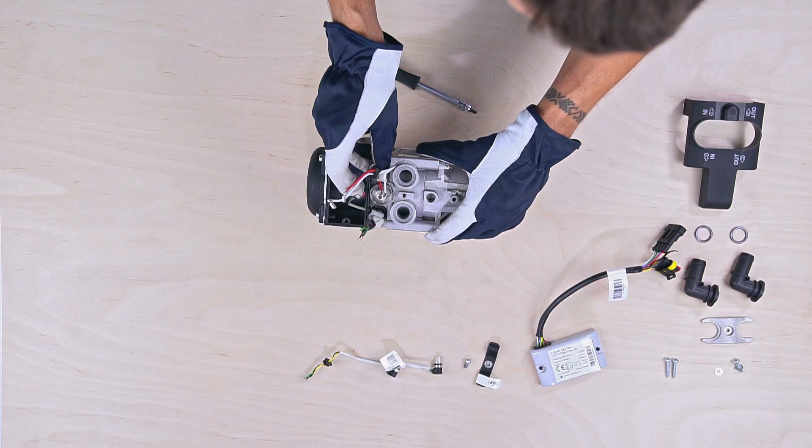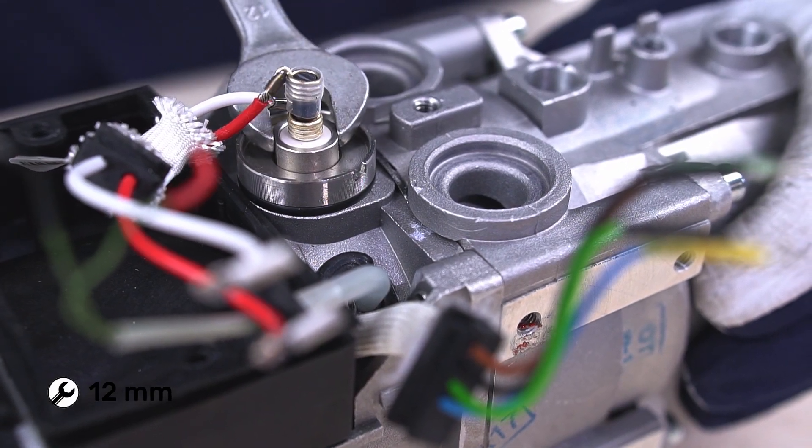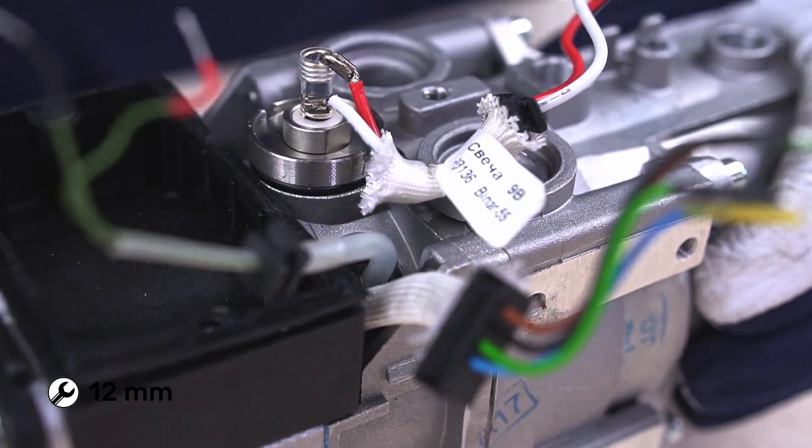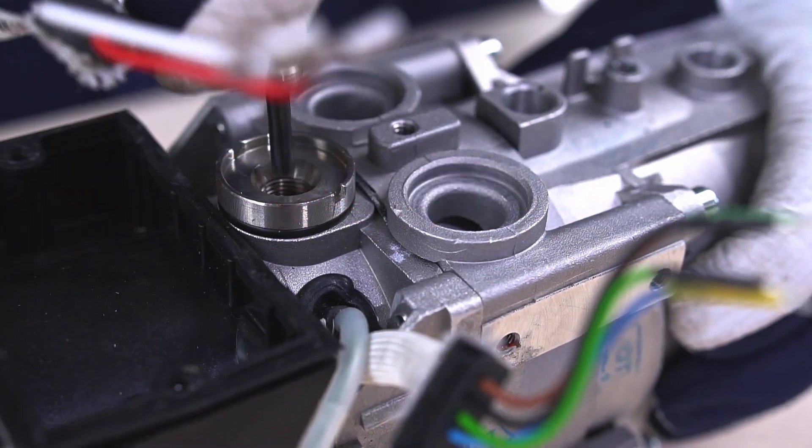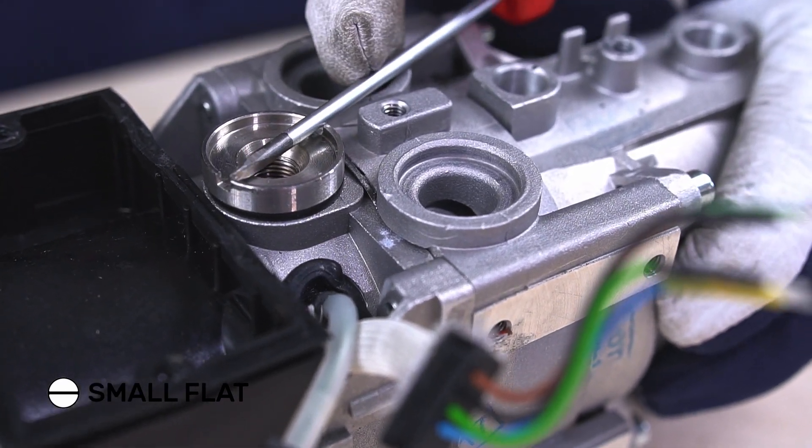Next, we carefully remove the glow plug with a 12mm open-ended spanner. Be careful not to break the wires off the glow plug. Now, with the small flat screwdriver, remove the glow plug bushing.